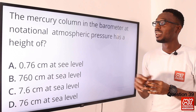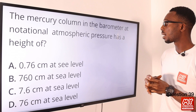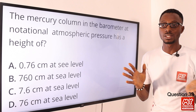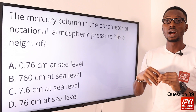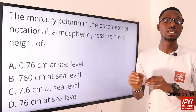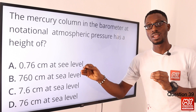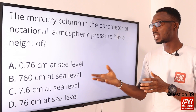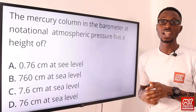Question 39. The mercury column in a barometer at normal atmospheric pressure has a height of what? This is a basic fact — at sea level, the standard reference point is 76 cm, which is equivalent to 760 mm. The correct option is option D.